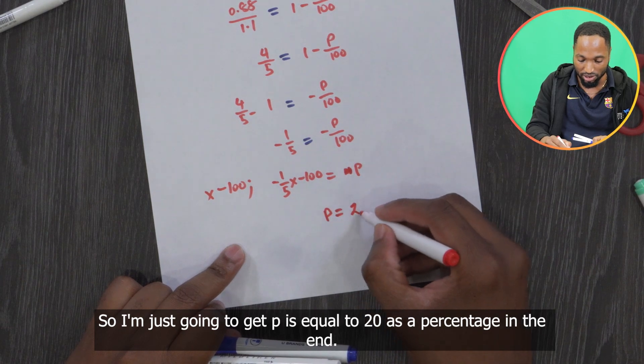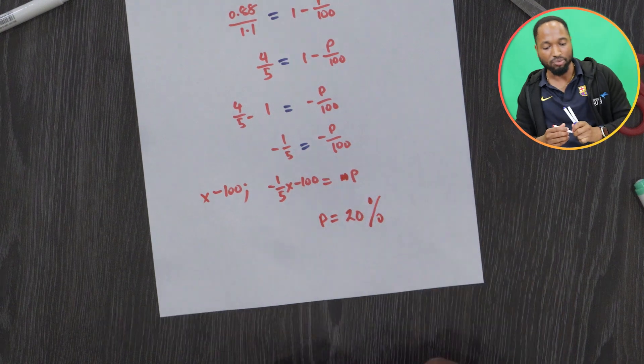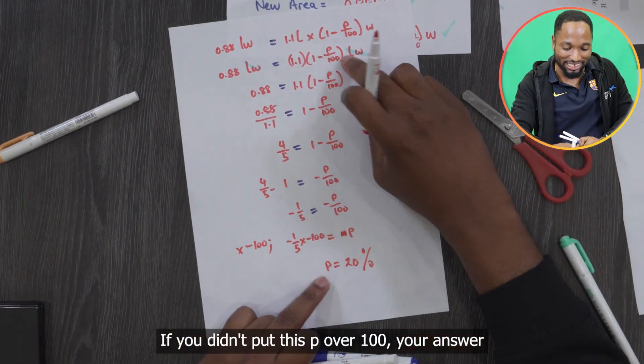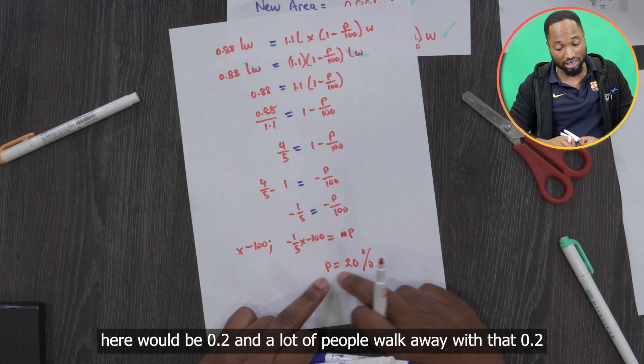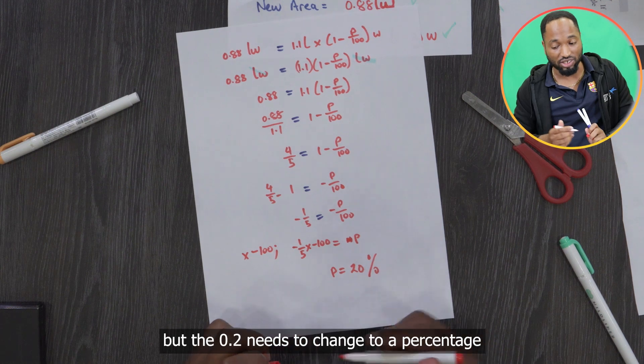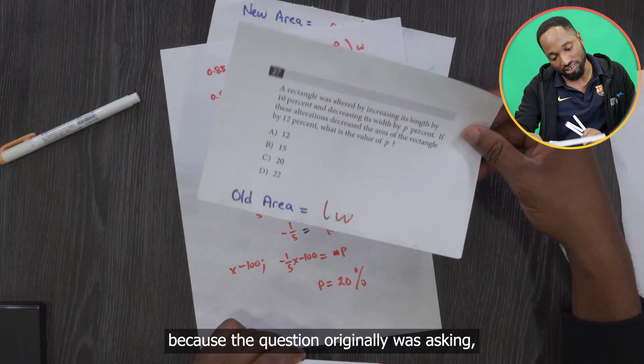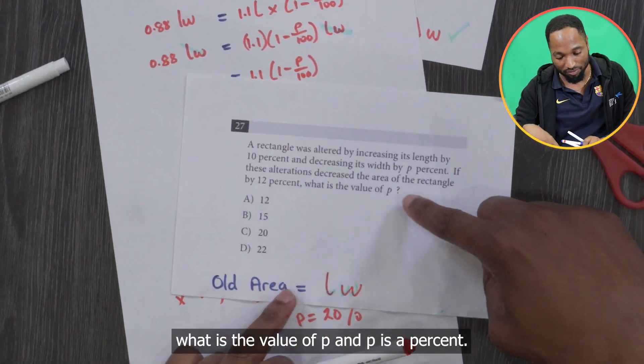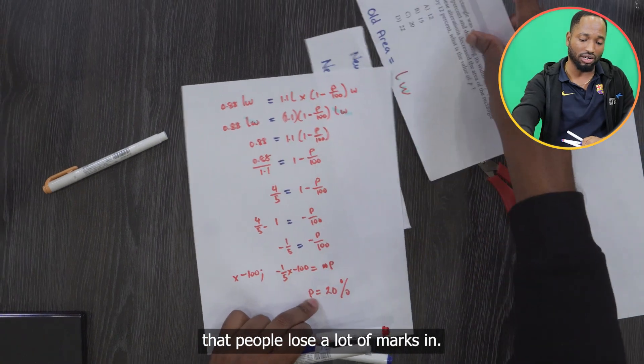So I'm just going to get P is equal to 20 as a percentage in the end. If you didn't put this P over 100, your answer here would be 0.2, and a lot of people walk away with that 0.2. But the 0.2 needs to change to percentage because the question originally was asking what is the value of P, and P is a percent. So this is one of the tricky questions that people lose a lot of marks in.